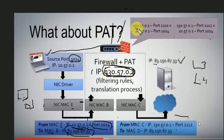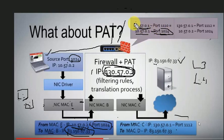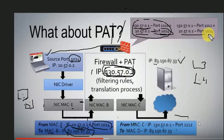There is a NAT table. For example, 10.57.0.1 with a source port is mapped to an external IP — the EIP — with a changed port number. The NAT table records these port changes. When another system sends traffic, the table adds another entry with the same external IP but a different port number.